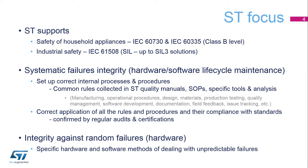Systematic failures are predictable, and their avoidance and monitoring are based on practical experience gained in the industry. Systematic failures can be avoided mainly by applying correct internal processes throughout a project's lifecycle. These requirements are defined in specific internal quality documentation. Regular inspections and audits ensure that these internal rules are applied and comply with the recognized standards.